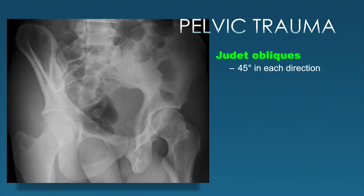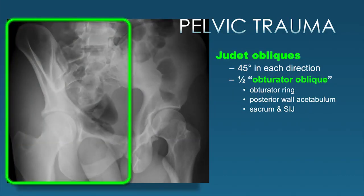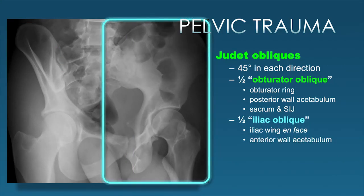The oblique views, or Judet views, are roughly 45 degrees in each direction. Each oblique view has two images. One half is referred to as the obturator oblique because we see the obturator ring coming right at us; from this view we can see the posterior wall of the acetabulum as well as the sacrum and SI joint. The other half is the iliac oblique because we see the iliac wing facing us, allowing visualization of the anterior wall of the acetabulum.